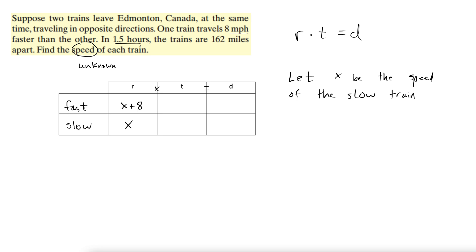It gives us the time: in 1.5 hours. They left at the same time, so they've each been traveling for 1.5 hours. 1.5 goes here and here, and then we just multiply across to get distance. So we have 1.5 times x plus 8, and here we just have 1.5x.